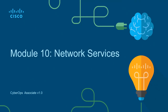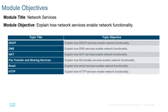Module 10: Network Services. These are services tied to network infrastructure, things like DHCP, DNS, and NAT. We're also going to talk about application services commonly associated with the network level, things like FTP and other file transfer protocols, email, HTTP, and variations of HTTP as well.